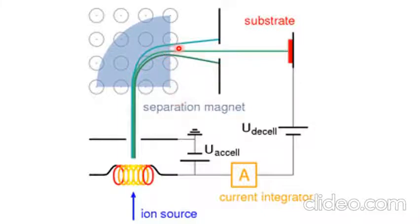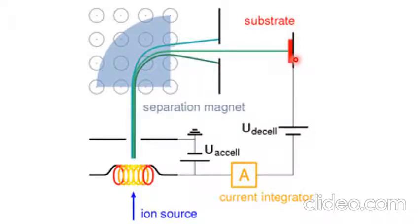In this way the desired ions move straight ahead toward the surface of the substrate, and we incorporate or implant the desired ions onto the substrate material. This is all about the ion implantation equipment and its working principle, essential components, and essential instruments which are present inside the ion implantation equipment.